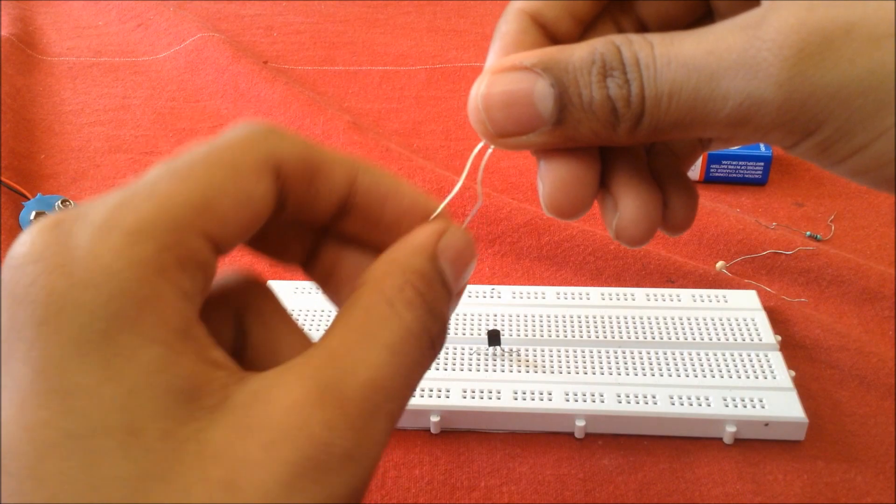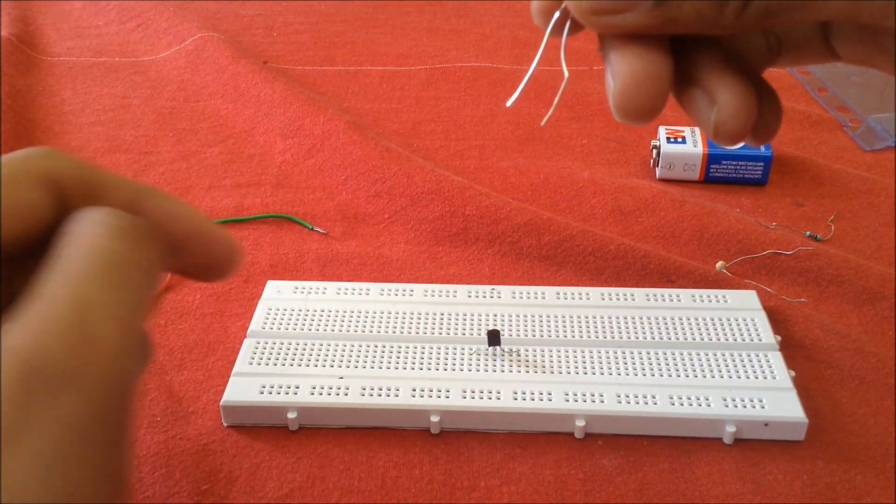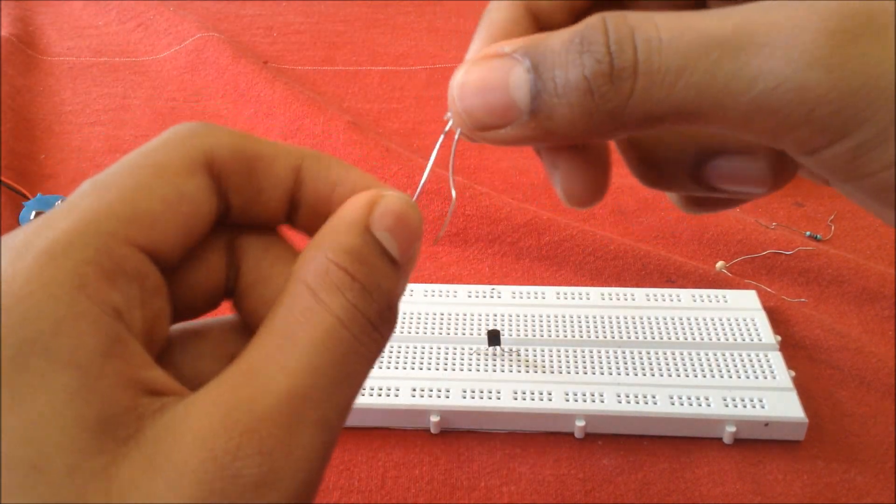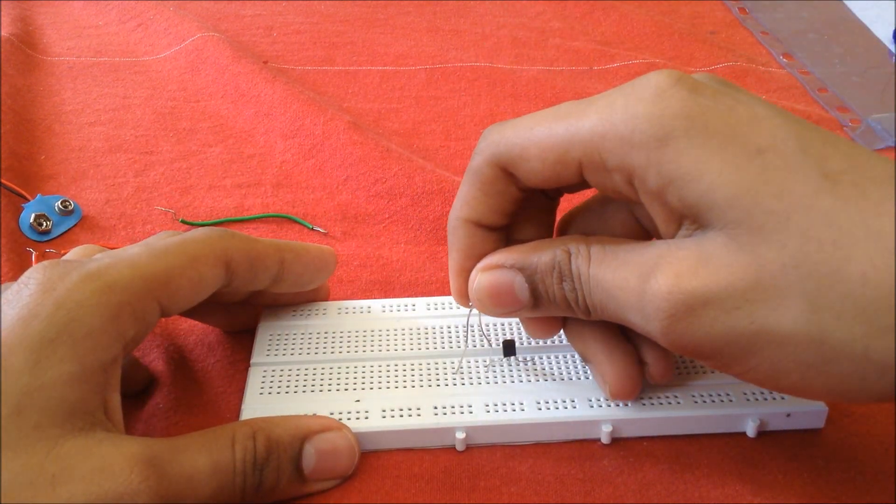The cathode is usually shorter than the anode and goes to the negative terminal. The longer terminal will be attached to the transistor here.